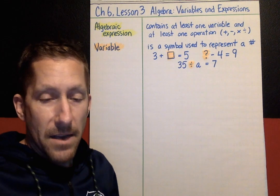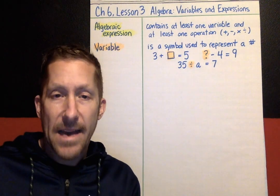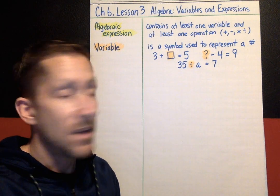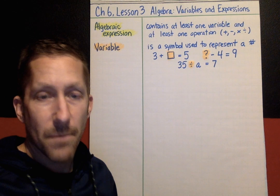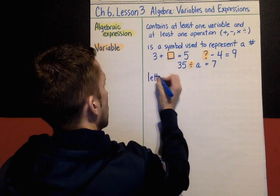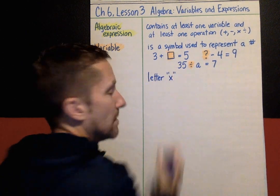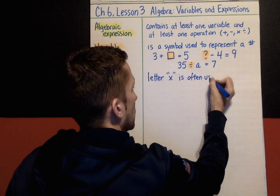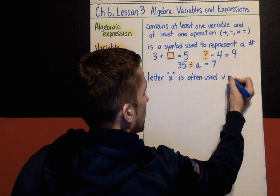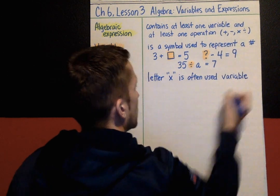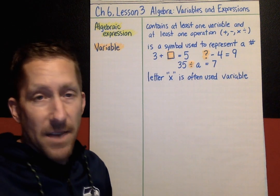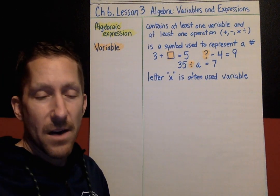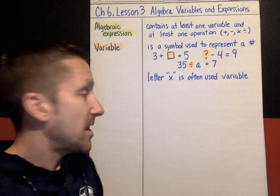Starting in sixth grade and continuing on in mathematics, letters are the most common variables used. You can use any letter of the alphabet — 'o' is generally not a good choice because it looks like a zero, but you could use it. The letter x is the most common letter used as a variable, which can get confusing because x of course looks like a multiplication sign. But it can be any letter, and you'll see examples today with lots of different letters.